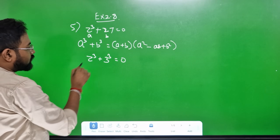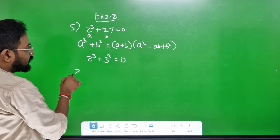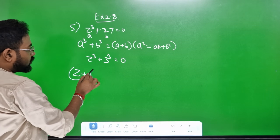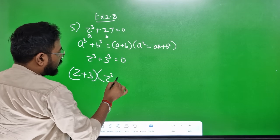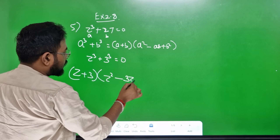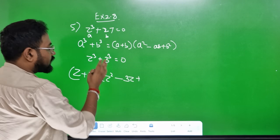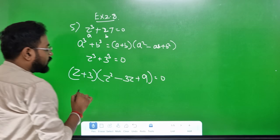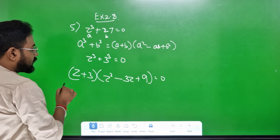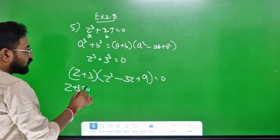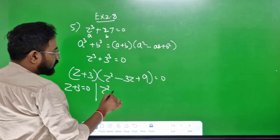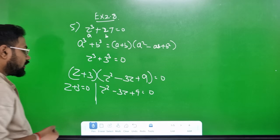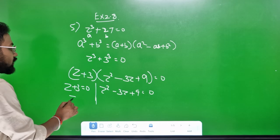So a plus b: a is z and b is 3, so z plus 3. And a² minus ab plus b²: z² minus 3z plus b² equals 0. Three squared equals 0. So z plus 3 equals 0 — that's one factor. And z² minus 3z plus 9 equals 0 — that's the other factor. Now, z equals minus 3.